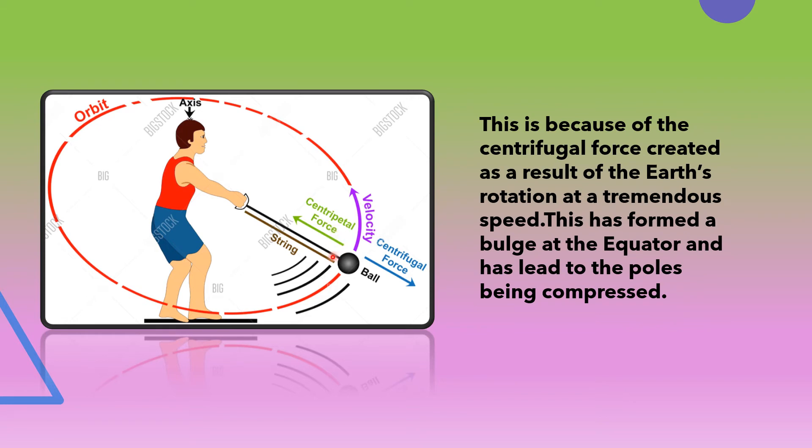So the poles are compressed while the equatorial region is bulged.